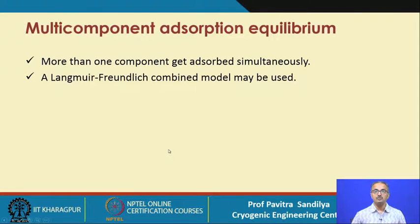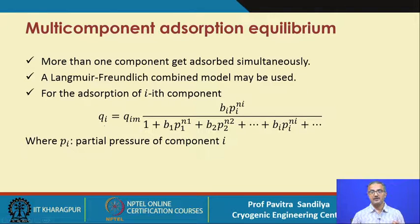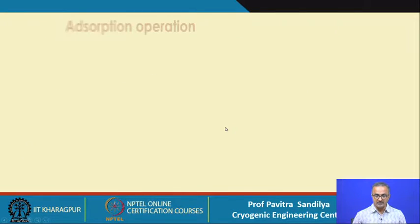For multi-component adsorption, when more than one component is being adsorbed, we modify the Langmuir isotherm so that the loading of the i-th component accounts for all components having the tendency to get adsorbed. This is a combination of both Langmuir and Freundlich expressions, where N₁, N₂ and B₁, B₂ are parameters estimated from experimental data.